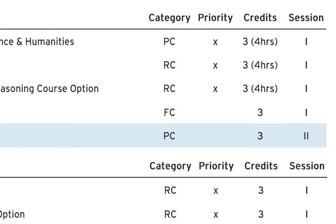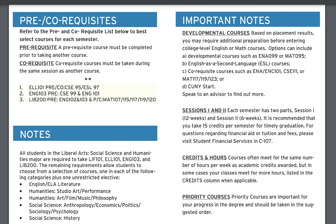Please note that even though the example lists five courses per semester, it does not mean that you are required to take five courses per semester. The Degree Map also offers a list of prerequisite and co-requisite courses, as well as program notes and important notes that you will need to review. Thank you.